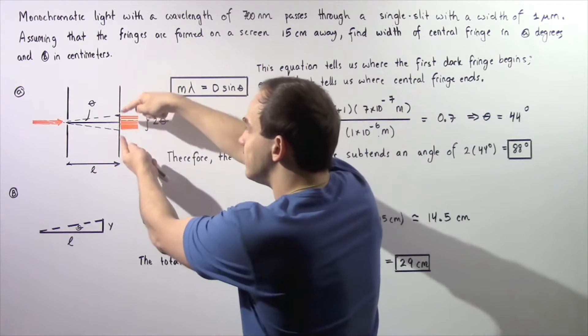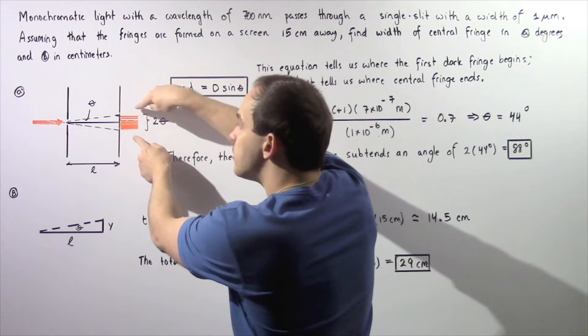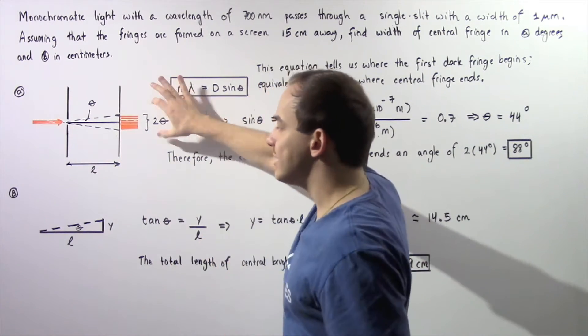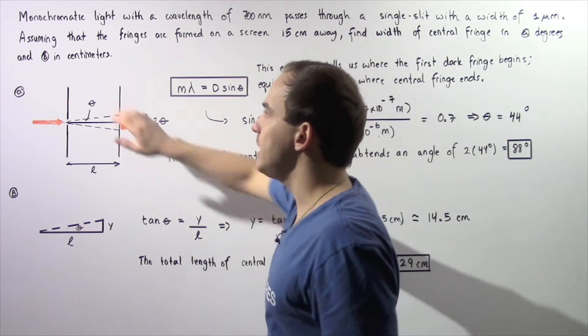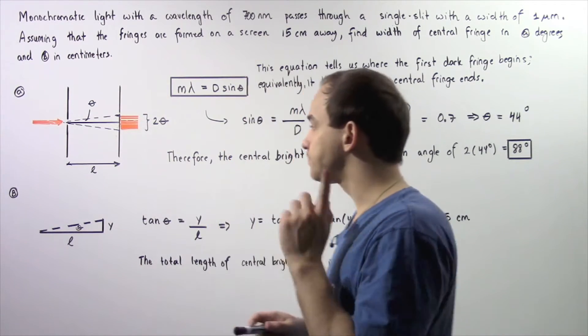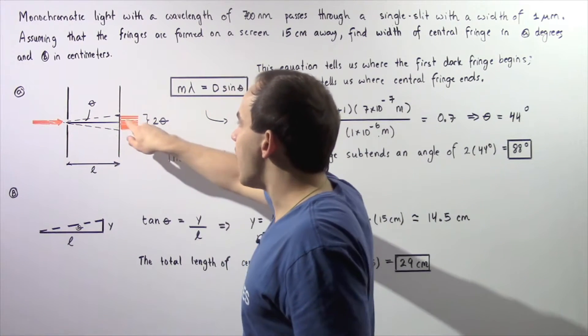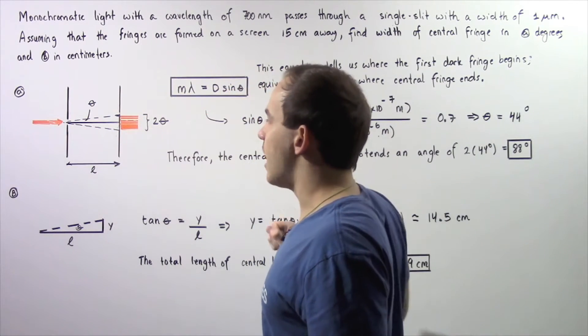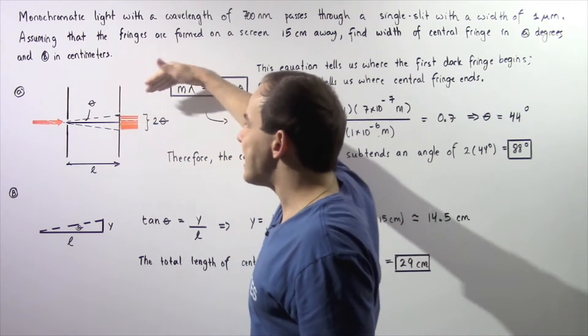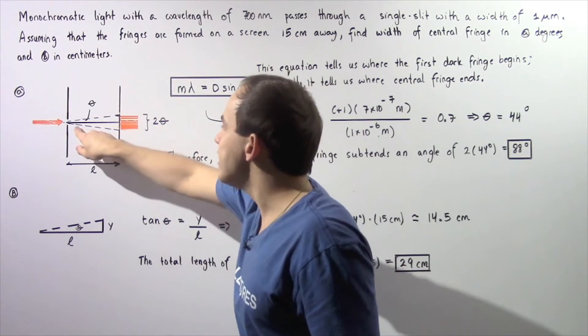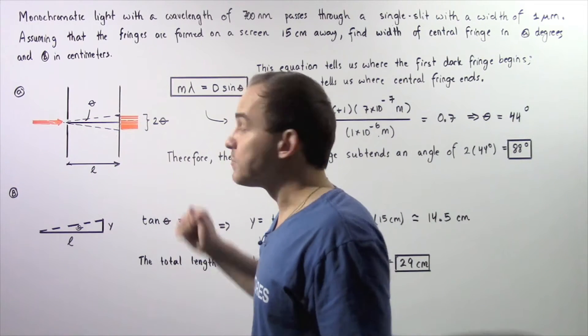We want to calculate the width of this bright fringe in degrees and then in part B in centimeters. Let's suppose that this black line is the horizontal line and this upper dashed line is the upper ray and this is our lower ray.